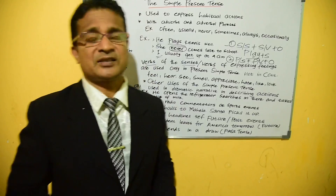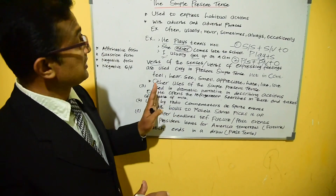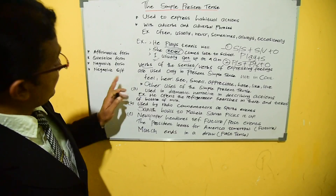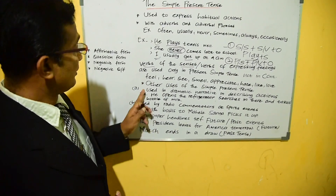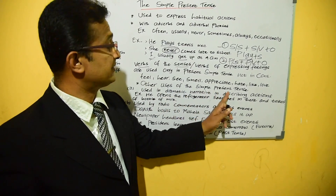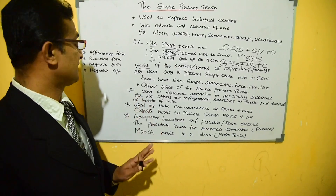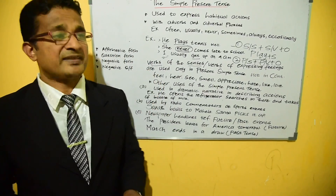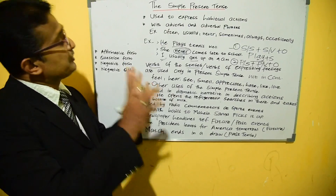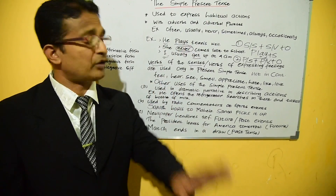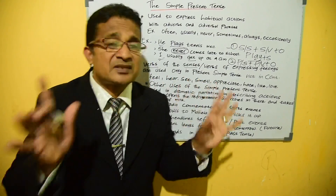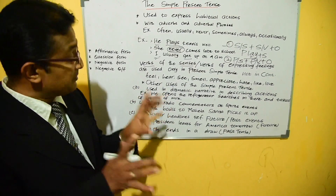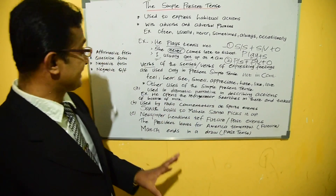This is just a simple insight to help you understand what to use and what not to use. This is the most important part of this lesson - the other uses of the present simple tense. The present simple tense is used in dramatic narrative describing actions, particularly in a play. Just imagine a drama or play.